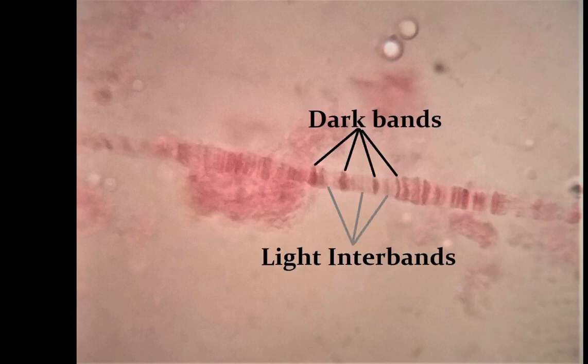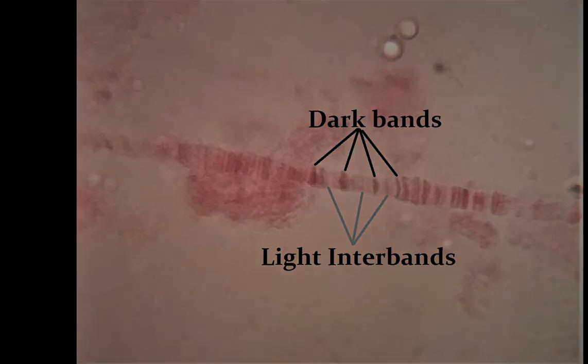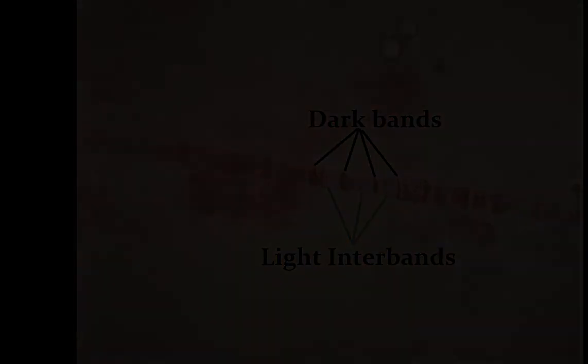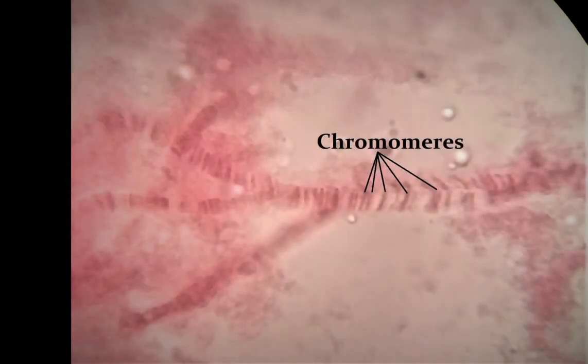Polytene chromosomes at interphase contain two types of bands: the dark bands and the lightly stained inner bands. The dark bands contain more DNA and less RNA, while the inner bands contain more RNA and less DNA. The banding pattern is distinctive for each chromosome in any given species. Individual bands are sometimes called chromomeres.